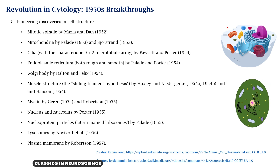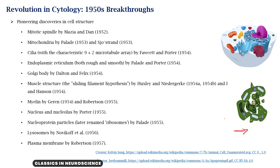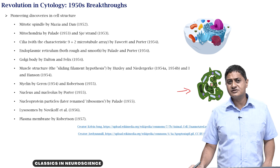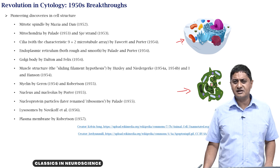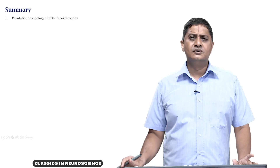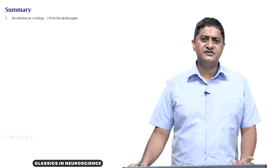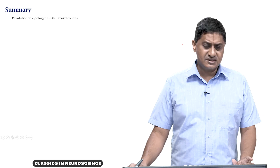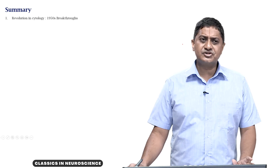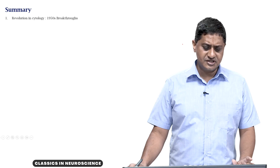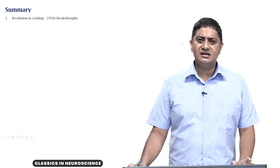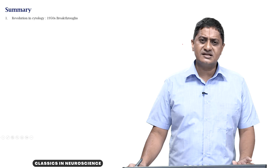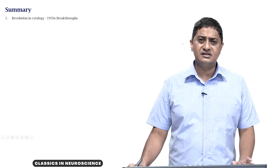Another representation shown here in animation illustrates these various structures being individually isolated or observed. What is shown is a 3D rendering of what was observed. With this we come to the end of this video, in which we discussed the revolution in cell biology and cytology in the 1950s and how the electron microscope enabled the visualization of various organelles and subcellular structures. Thank you very much for your attention.